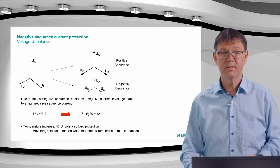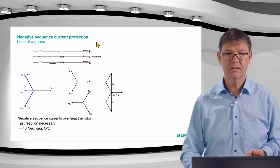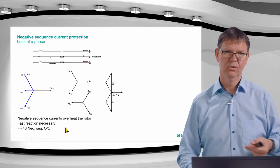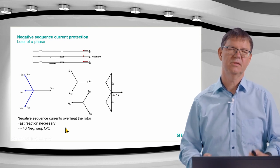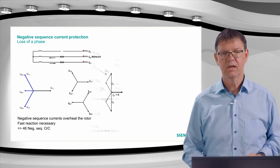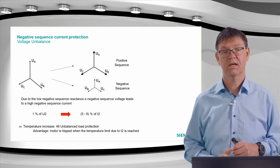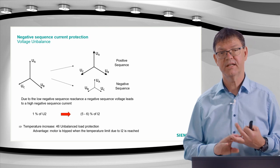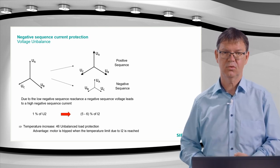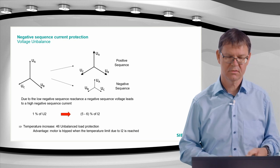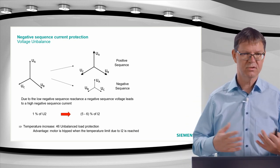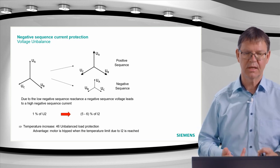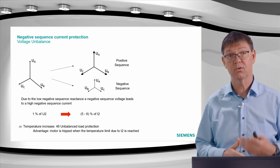There are two different principles. For an open phase producing large negative sequence current, we use a simple overcurrent stage with a fast tripping time. For slight unbalance, we work with a thermal image — which is why this function is called Function 46: unbalanced load protection, not negative sequence overcurrent protection. One just looks at the current and trips after a set time; the other calculates temperature from the negative sequence current.